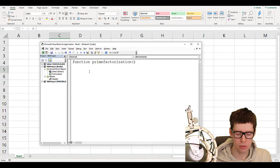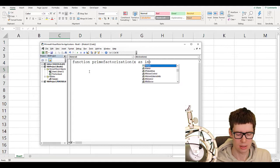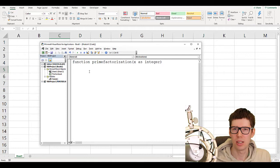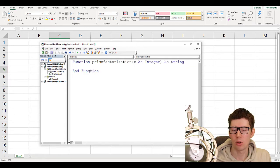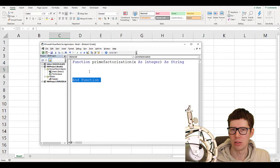So the input, let's call it x, and it's going to be an integer, as integer. And the output is going to be a list of prime numbers, perhaps delimited somehow, so we're going to make a string, as string. And then you can hit Enter, and VBA will automatically add the end function at the end of the script. The rest of the script needs to be between these two lines, function and end function. And next, we just have to start writing the code.